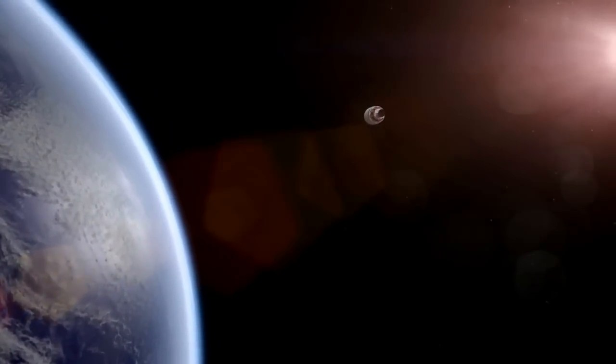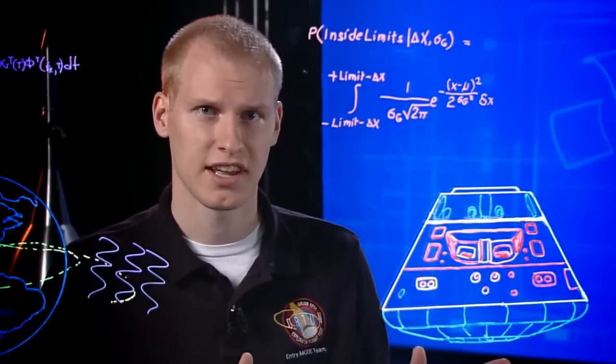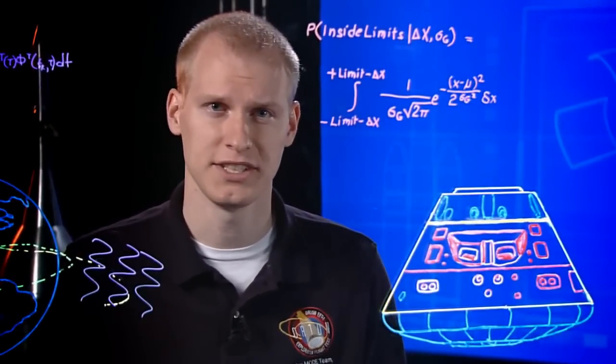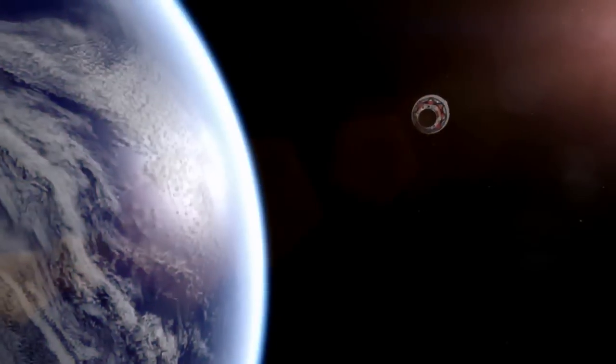But Orion has protection. Shielding will be put to the test as the vehicle cuts through the waves of radiation. Sensors aboard will record radiation levels for scientists to study. We must solve these challenges before we send people through this region of space. For this flight, it's time to head home.